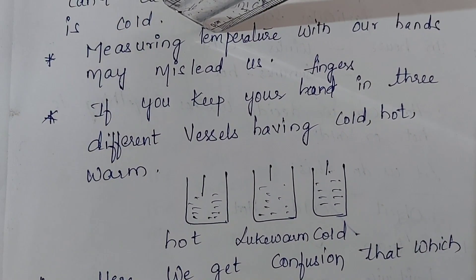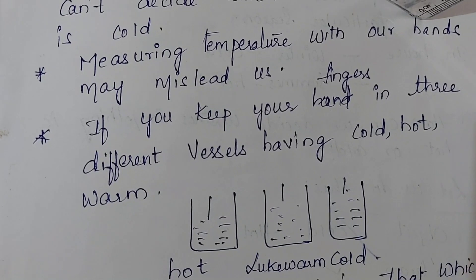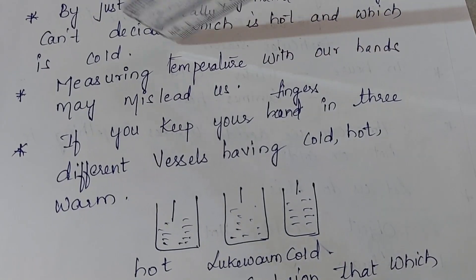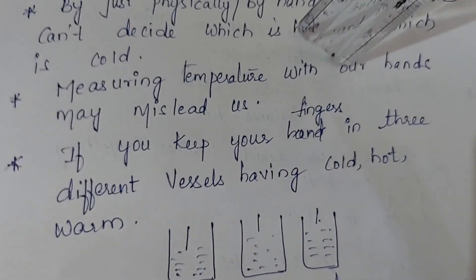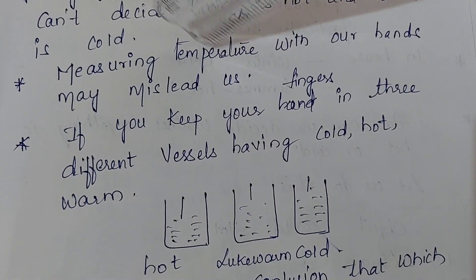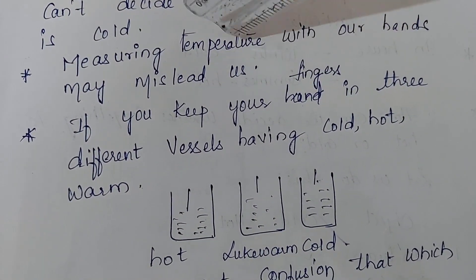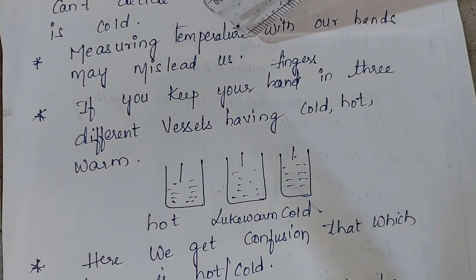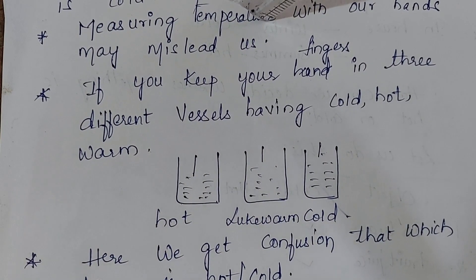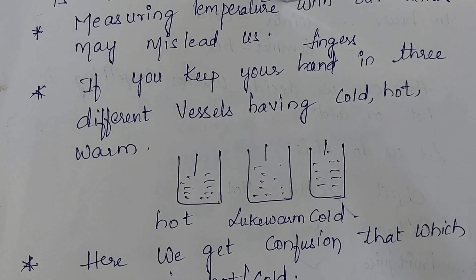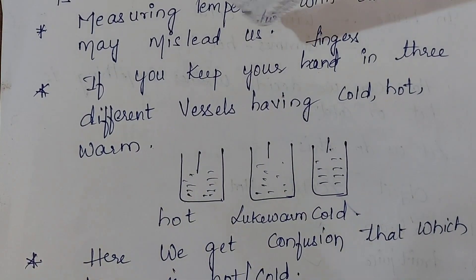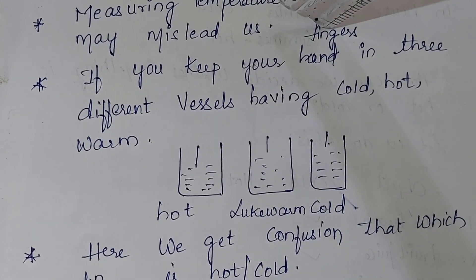When we measure something like length with our hand it will mislead us. Like that, measuring temperature with our hands may mislead us — some can bear that hotness and some cannot. Sometimes when the outer temperature is hot, we feel even a slightly cool thing as very cool. In winter, fruits taken out from the fridge don't feel very cool, but in summer you immediately feel the coolness because the outer temperature is very hot.